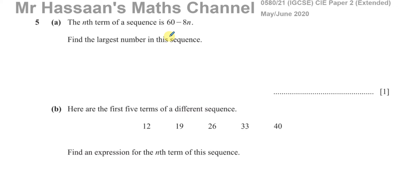This question is about sequences. Part A says the nth term of a sequence is 60 minus 8n. Find the largest number in the sequence. Now, this is a sequence that is decreasing. Every term is going to be less than the term before it because you're always taking away something from this number.